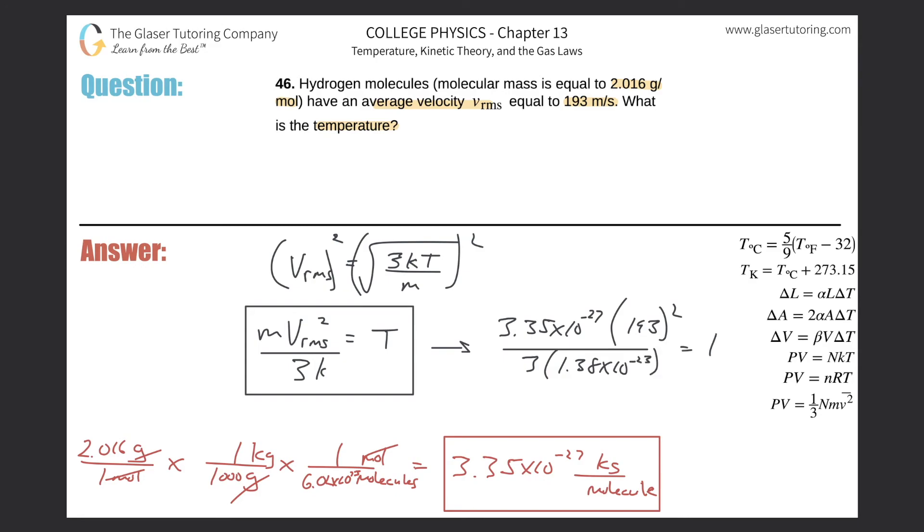All we have to simply do—this will be equal to the temperature. Just throw it into the calculator. I'm going to take that exact mass, multiply by 193 squared, and then divide it by 3 times 1.38 times 10 to the minus 23rd.